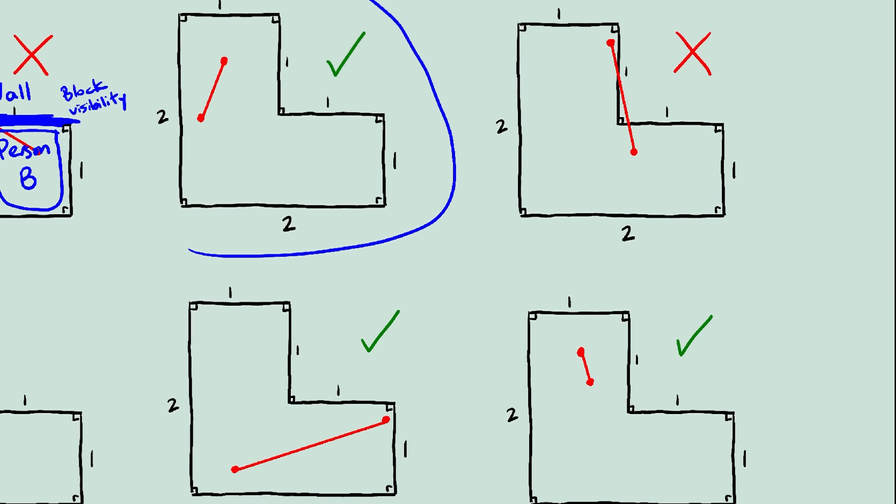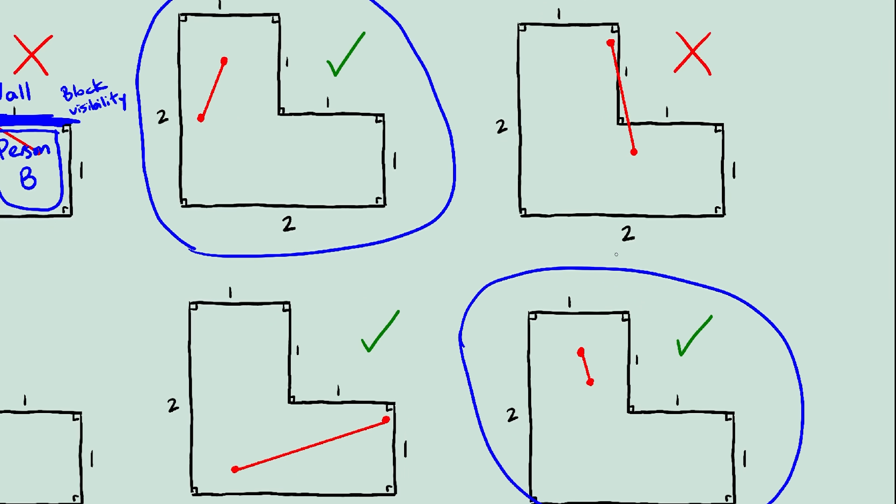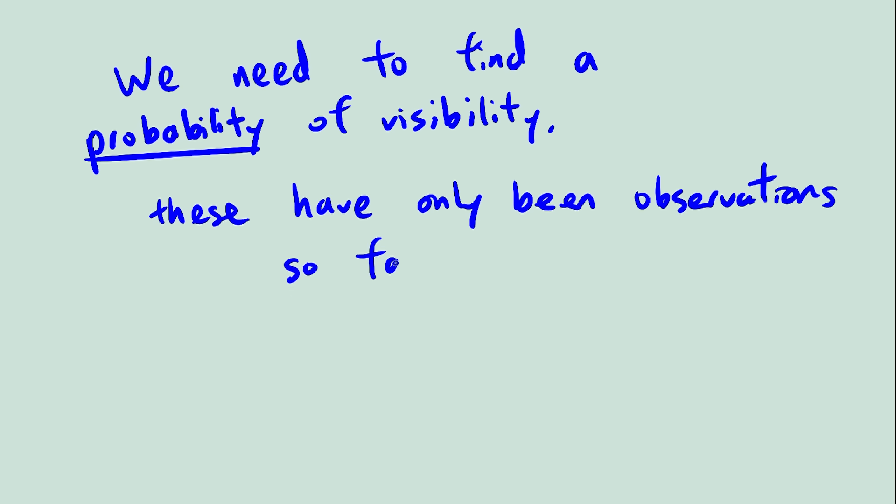Also, we've noticed that if the two people are closer to one another, they have a much higher chance of being able to see each other. But this doesn't really give us much to work with, back to more experimenting.